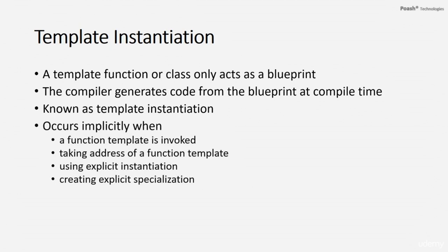Template instantiation happens implicitly in the following cases: first, when a function template is invoked; second, if you take the address of a function template, the compiler is forced to instantiate it; third, when you explicitly instantiate a function template; and finally, if you create an explicit specialization for a function template. We will learn about explicit instantiation and explicit specialization in subsequent videos.